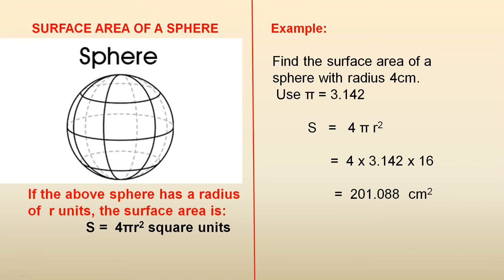Find the surface area of a sphere with radius 4 centimeters. Use pi equals 3.142. The surface area is 4 pi r squared, which is 4 by 3.142 by 16. And when you simplify that, the surface area is 201.088 square centimeters.